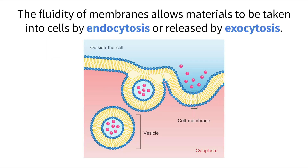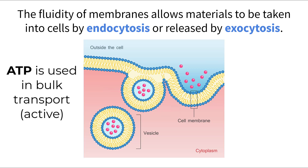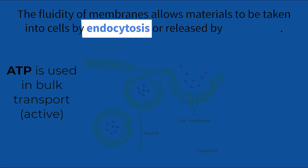Moving individual molecules one by one across the cell membrane is great, but what if the cell needs to move a large amount of particles at one time? The answer is bulk transport. The cell membrane, being made up of phospholipids and proteins in constant motion, is able to move large amounts of particles both into and out of the cell by using actual pieces of its membrane. This happens in one of two ways, depending on if the bulk substance is being moved into or out of the cell. In either method, energy such as ATP is being used. If the cell is taking in a large sum of particles from the outside, we call this process endocytosis.